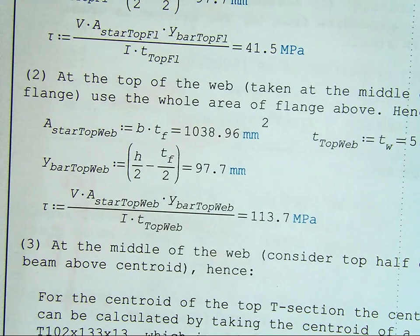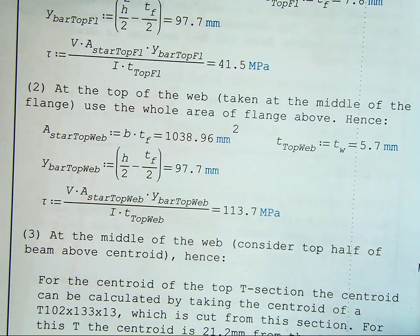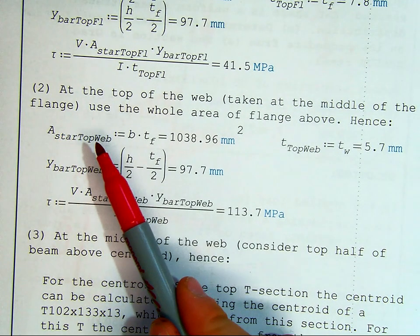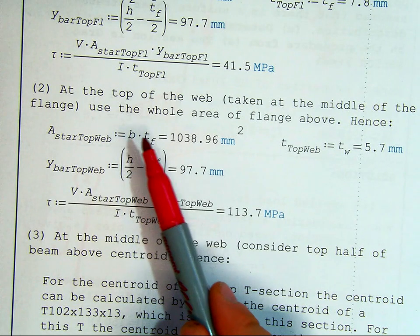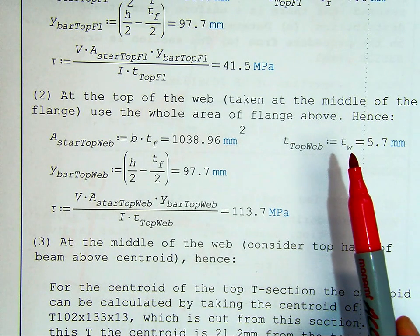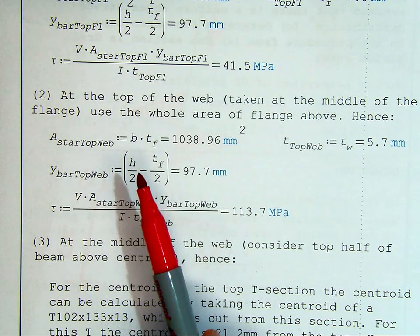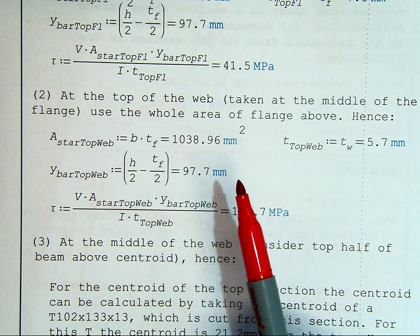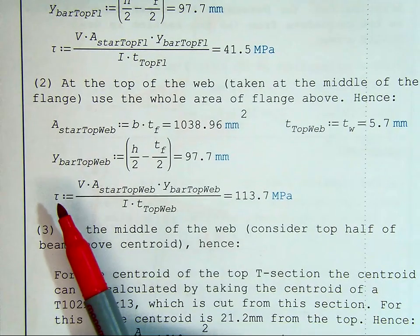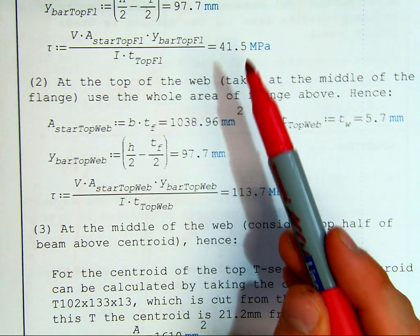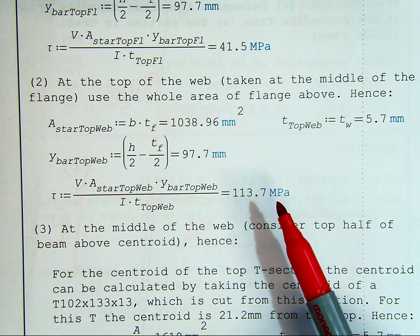At the top of the web, taken at the middle of the flange, use the whole area of flange above. Hence, the area of the top outside of the section we're considering is the total width times the thickness of flange. And then, now we're into the web. We're not using the flange value in terms of thickness anymore. And then, the distance is total distance minus thickness of flange over 2. This is the same distance as calculated previously. So, our stress now is 113.7. So, you can see there's quite a big jump in stress now as it goes from 41.5 to almost 114 MPa from the flange to the web.